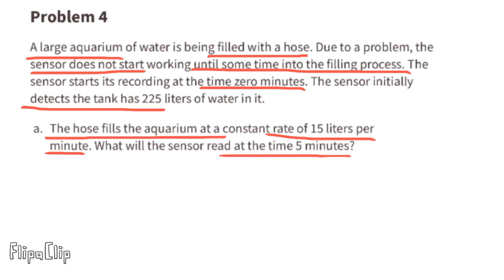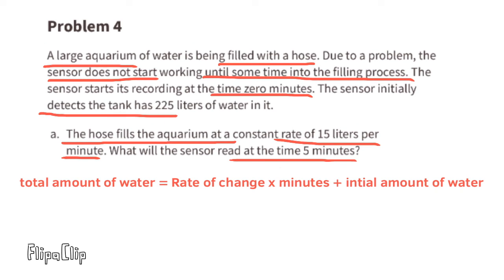Part a: The hose fills the aquarium at a constant rate of 15 liters per minute. What will the sensor read at the time five minutes? The total amount of water is going to equal the rate of change times the number of minutes plus the initial amount of water.